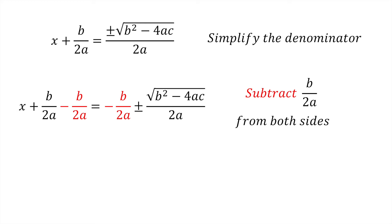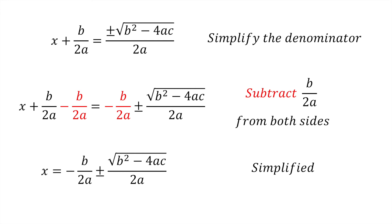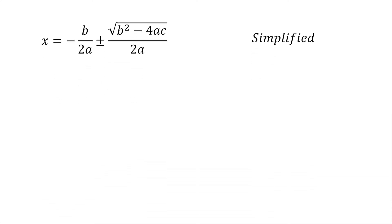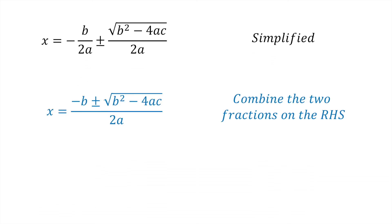Now we subtract b divided by 2a from both sides of the equation. This gives x equals minus b divided by 2a plus or minus the square root of b squared minus 4ac all divided by 2a. Finally, adding and subtracting the two fractions on the right hand side, we get the quadratic formula: x equals minus b plus or minus the square root of b squared minus 4ac all divided by 2a.